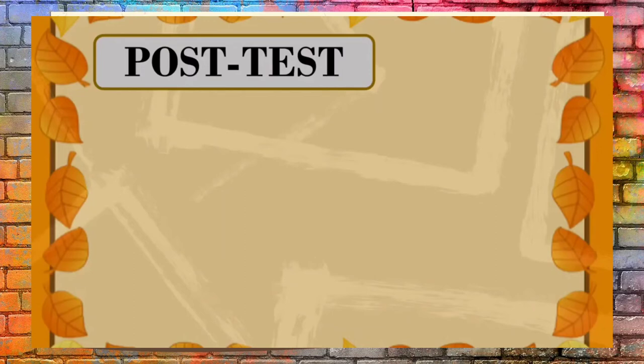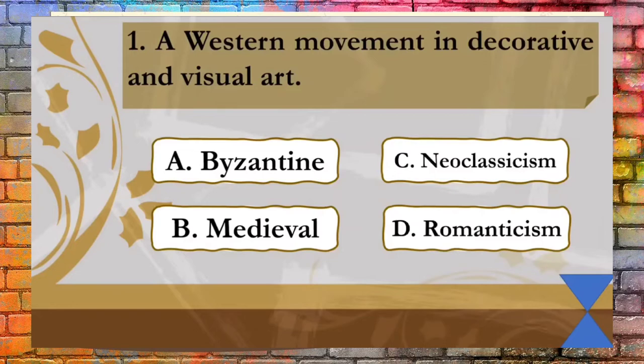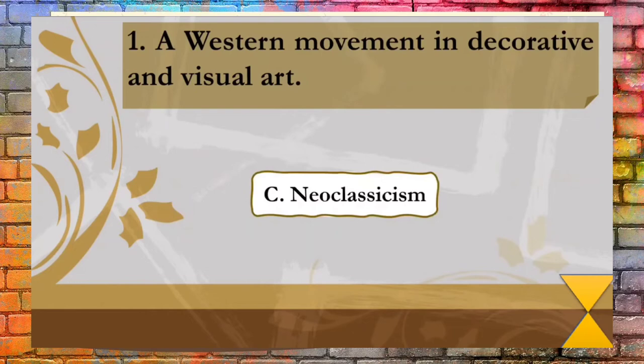For your last activity, let's have a post-test. Choose the letter with the correct answer. You will be given five seconds to think. Question 1: A Western movement in decorative and visual art. A. Byzantine, B. Medieval, C. Neoclassicism, D. Romanticism. The correct answer is C, Neoclassicism.